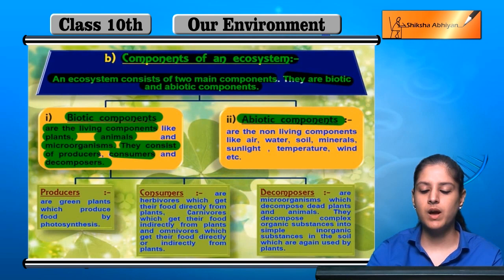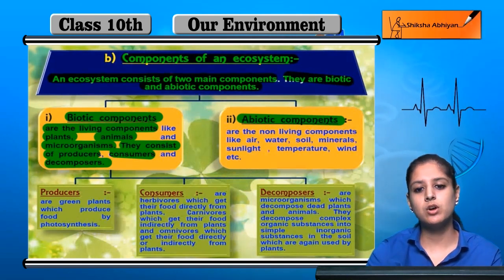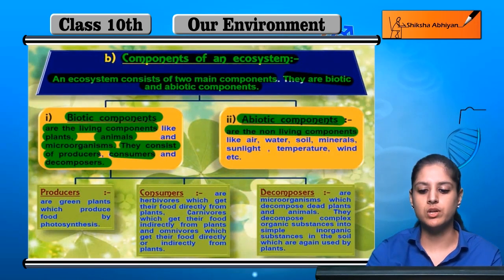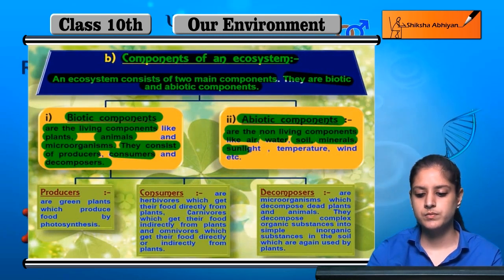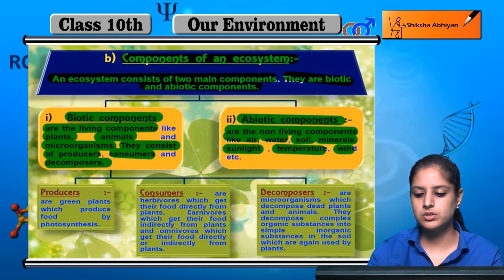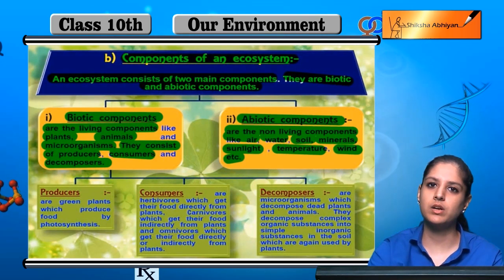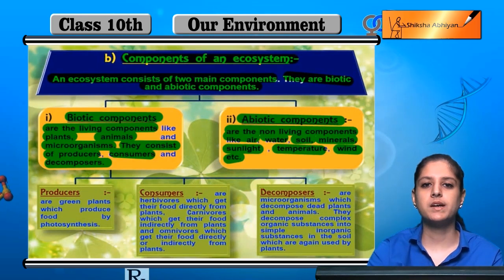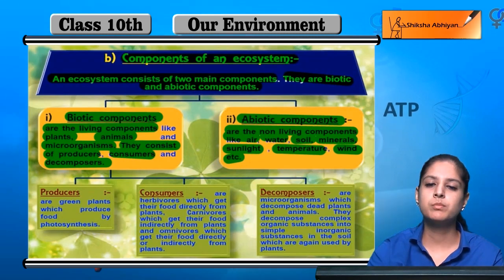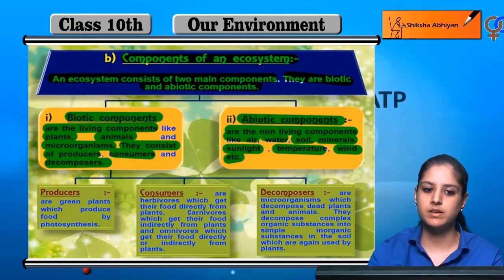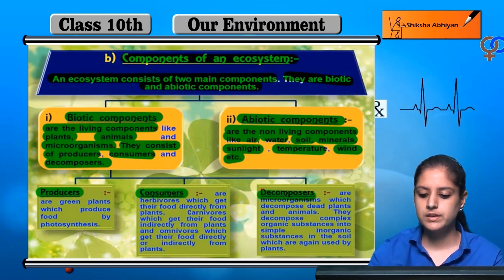We will come to those after looking at abiotic components. Abiotic components are the non-living components, like air, water, soil, minerals, sunlight, temperature, wind, etc. So one ecosystem is divided into two components: biotic, meaning living, and abiotic, meaning non-living. The biotic components are further divided into producers, consumers, and decomposers.